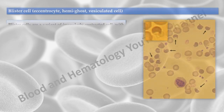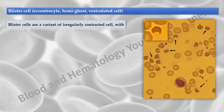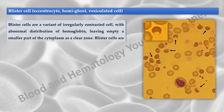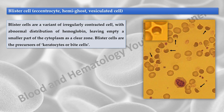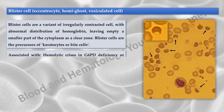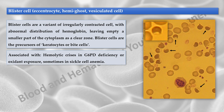Blister cells are a variant of irregularly contracted cell, with abnormal distribution of hemoglobin, leaving empty a smaller part of the cytoplasm as a clear zone. Blister cells are the precursors of keratocytes or bite cells, and are associated with hemolytic crises in glucose-6-phosphate dehydrogenase deficiency or oxidant exposure, and sometimes in sickle cell anemia.